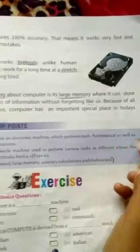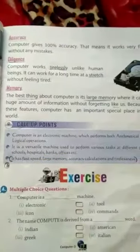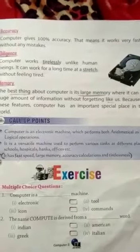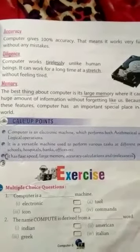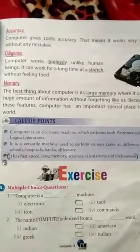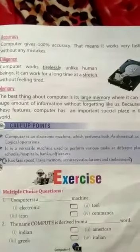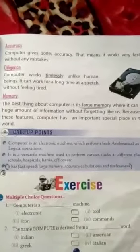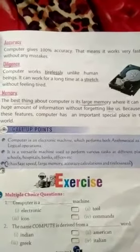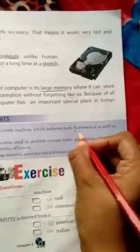Computer एक electronic machine है which performs both mathematical as well as logical operations। Mathematical मतलब अंकगणित — जहाँ पर addition, subtraction, गुणा, भाग इस तरह की चीज़ें करते हैं — वो mathematical operation में आता है।